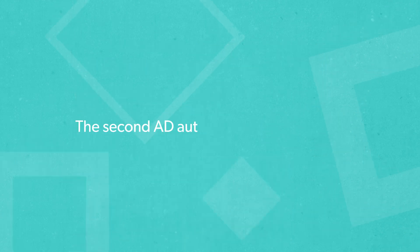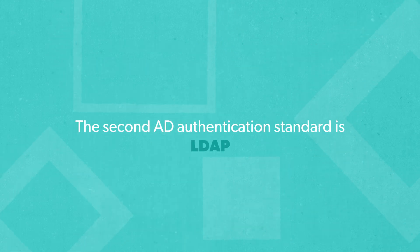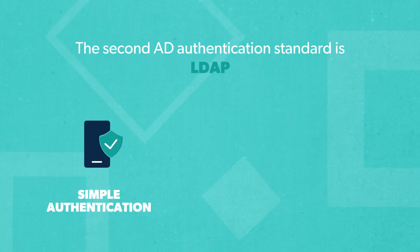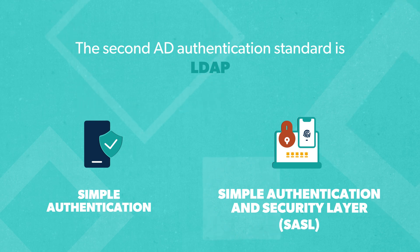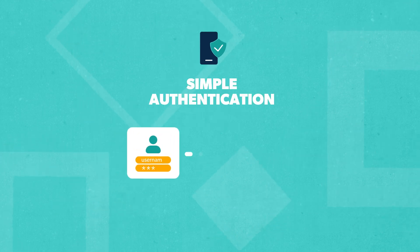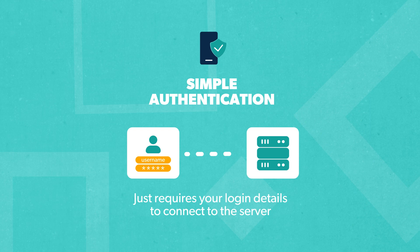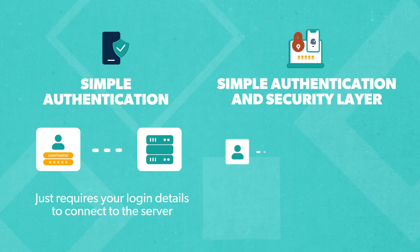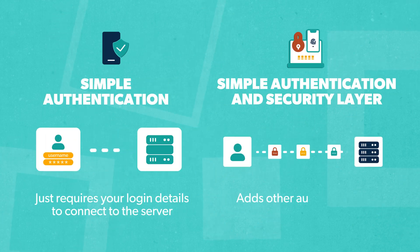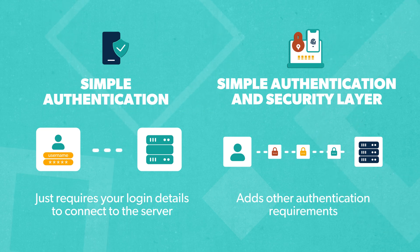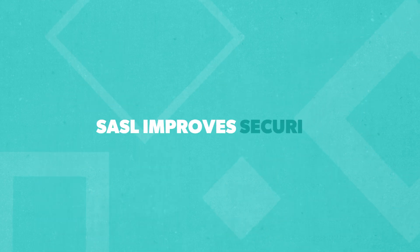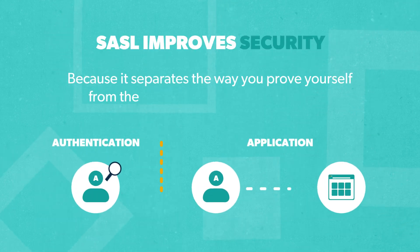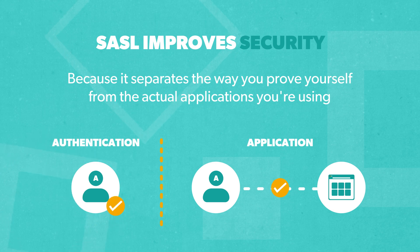The second AD Authentication standard is LDAP, which has two main options: Simple Authentication, and Simple Authentication and Security Layer, or SASL. In Simple Authentication, you simply use your login details to connect to the server. SASL, on the other hand, allows IT teams to create a more secure login process by layering on other authentication requirements like Kerberos to connect to the server. SASL improves security because it separates the way you prove yourself from the actual applications you're using.